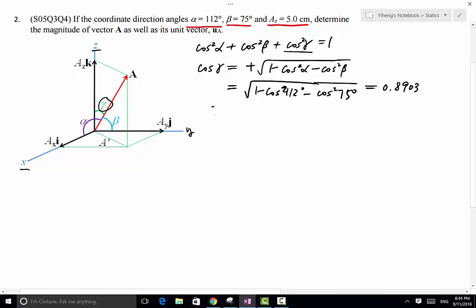So from there we can determine gamma, which equals to the inverse of cosine, 0.8903, and that equals to 27.09 degrees.